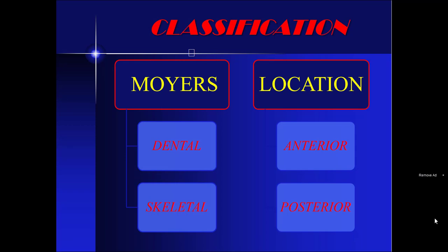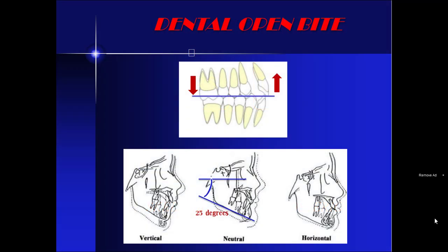Coming to classification, according to Moyers, it is of two types: dental open bite and skeletal open bite. Based on location, it is anterior open bite and posterior open bite. In dental open bite, it is due to supra-eruption of posterior teeth or infra-eruption of incisors. The skeletal orientation of jaws is absolutely normal in dental open bite. It varies with the growth pattern of the individual.